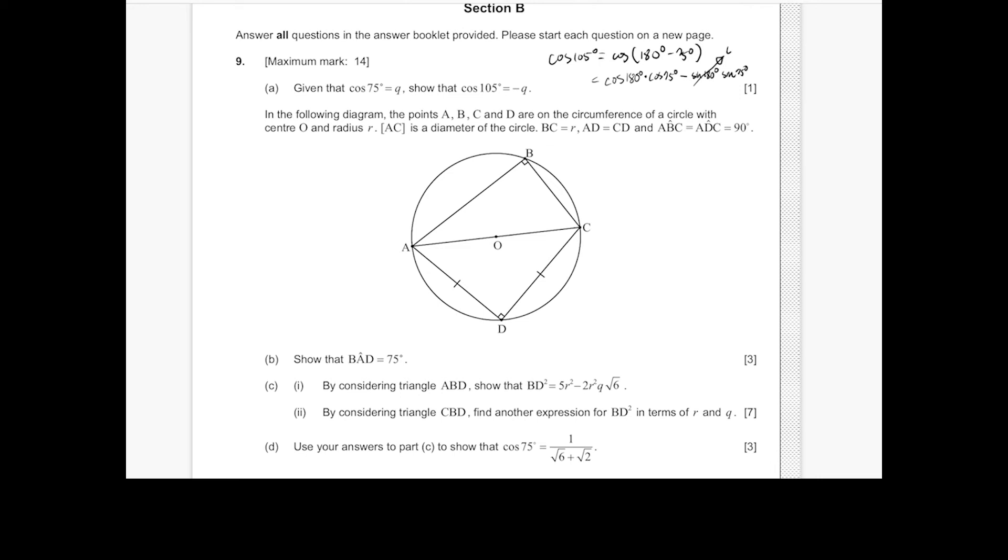And we know that sine 180 is 0. Meanwhile, cosine 180 is negative 1. So this is just going to be negative cosine 75 degrees, which is negative Q.